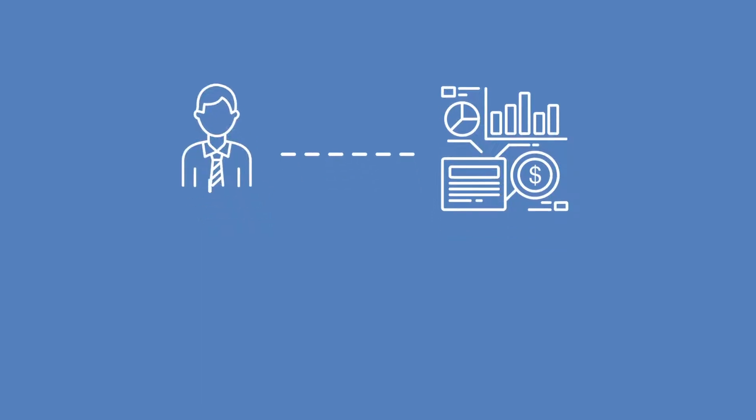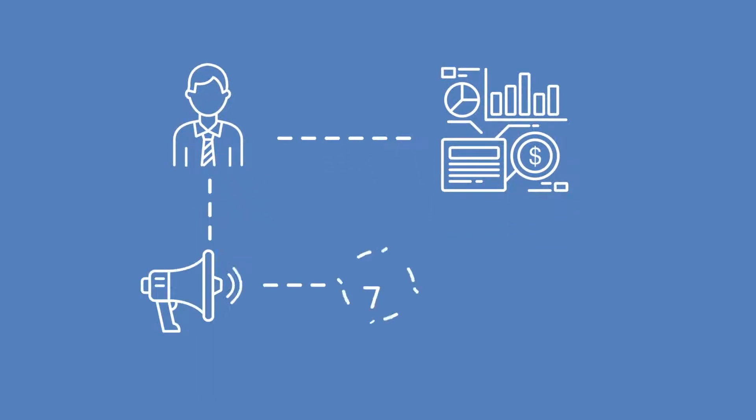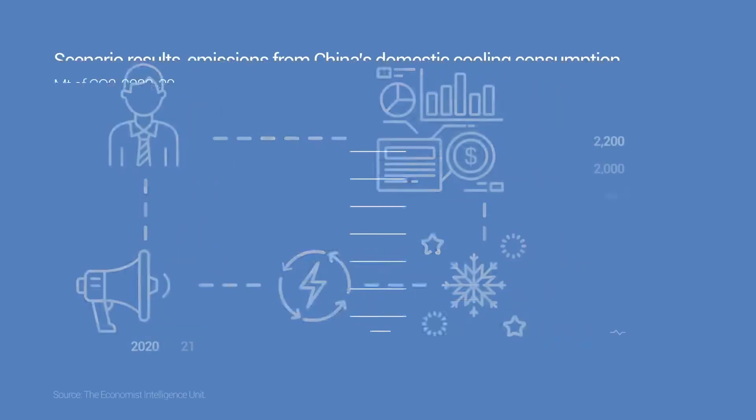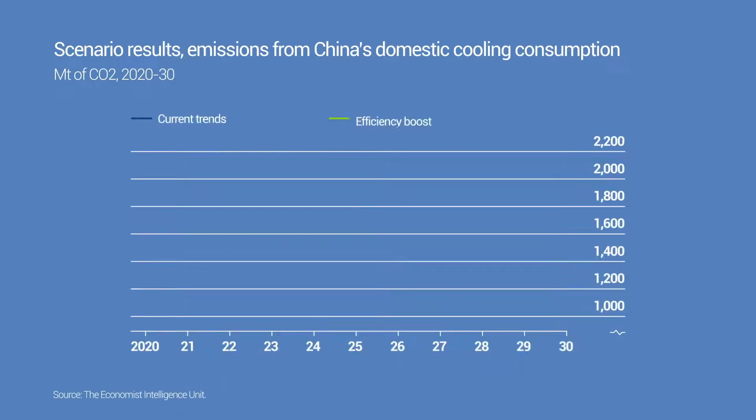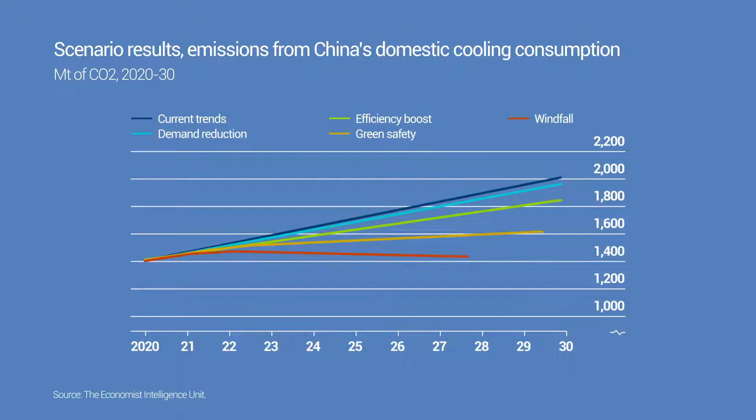The Economist Intelligence Unit has built scenario-based forecasts that take into account possible improvements in consumer awareness, energy efficiency, and refrigerant standards in the next decade, with the potential to reduce China's cooling emissions by 29 percent relative to current trends.